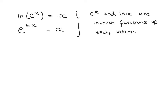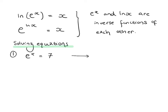We'll now solve some equations involving e to the x and ln of x, starting with simple examples and building up. Example one: e to the x equals 7. You can think of this as x equals log to the base e of 7, which is ln of 7. Alternatively, we take ln of both sides: ln and e cancel on the left, giving x, and on the right we have ln of 7.